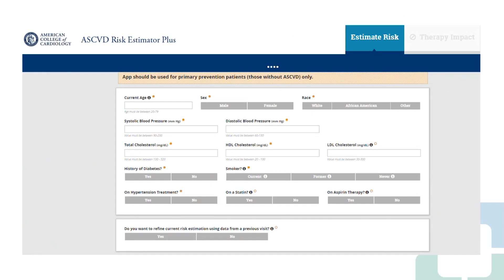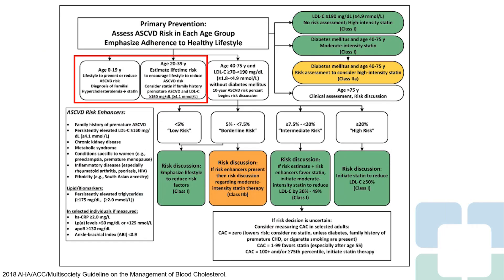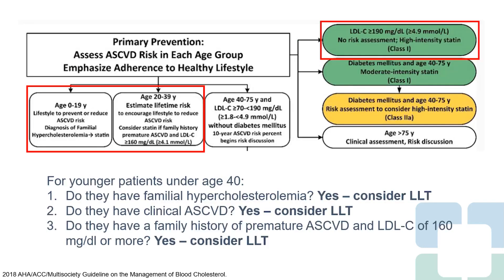Here's an example of our ASCVD risk estimator through ACC — there are web applications that can be used to calculate a 10-year risk profile. But the question becomes: what do we do about our patients younger than the age of 40, and when do we consider statin therapy for primary prevention in these patients specifically?